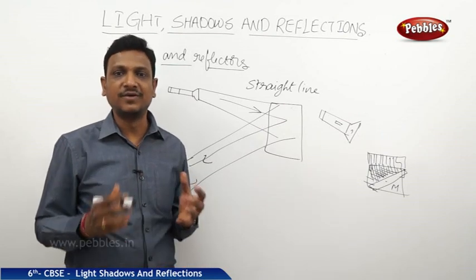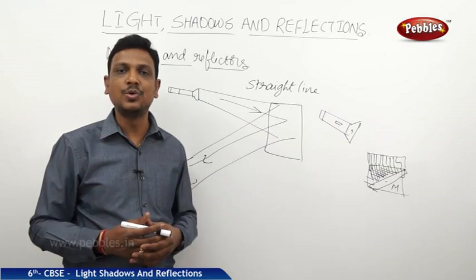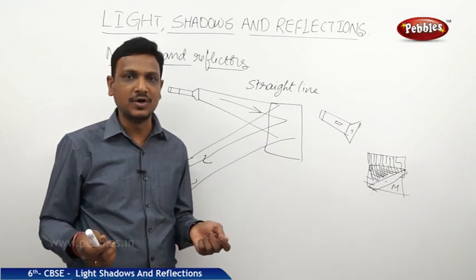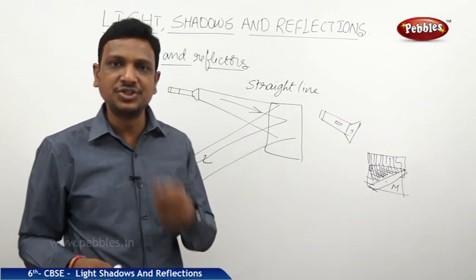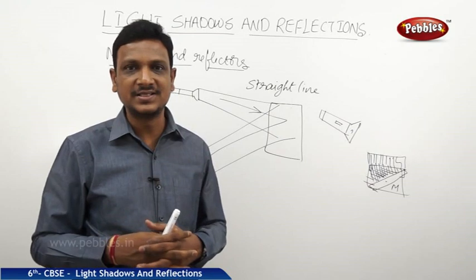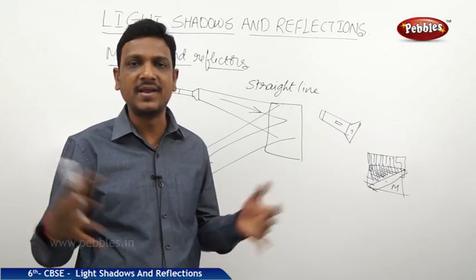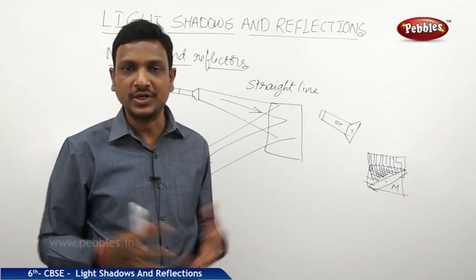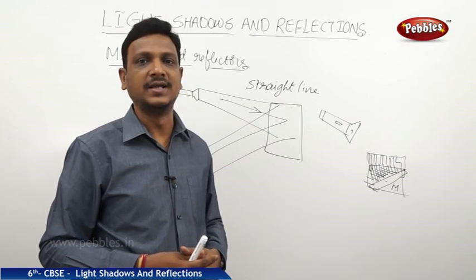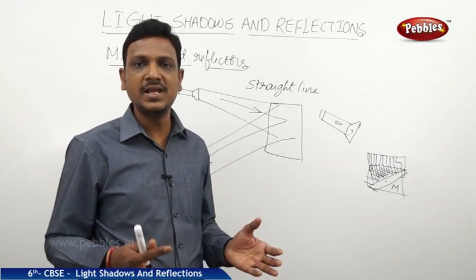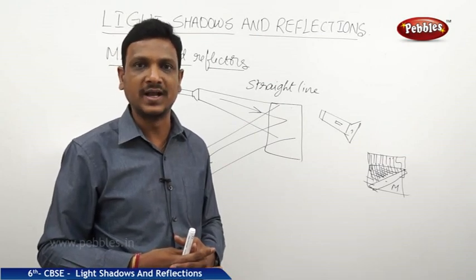This property of light getting reflected is used in many places with many applications. Every day you use mirrors to comb your hair, brush your teeth, wash your face, get makeup done, and for dressing — everything requires a mirror. It works on the principle of reflection of light. You will learn more details and properties of light in your higher classes.